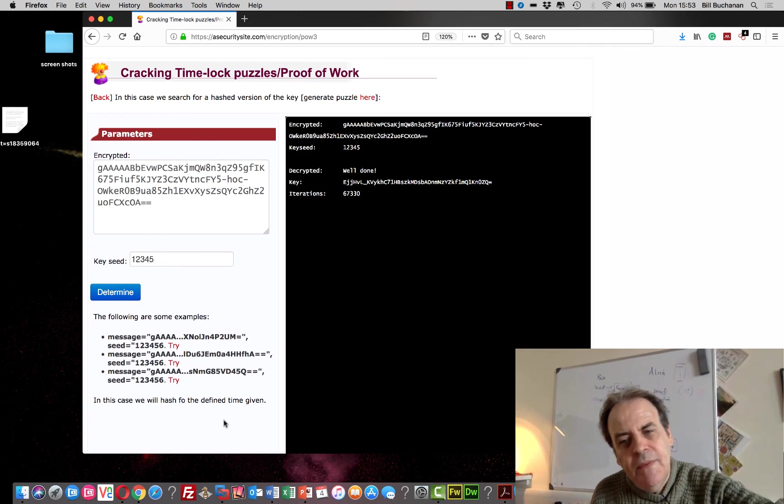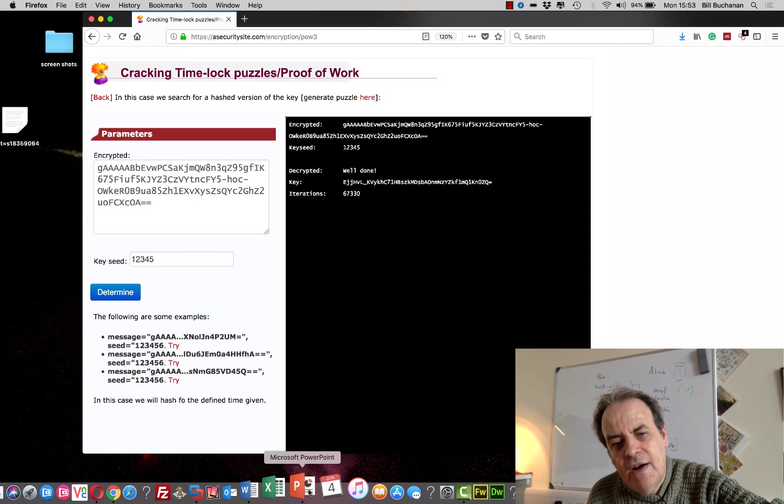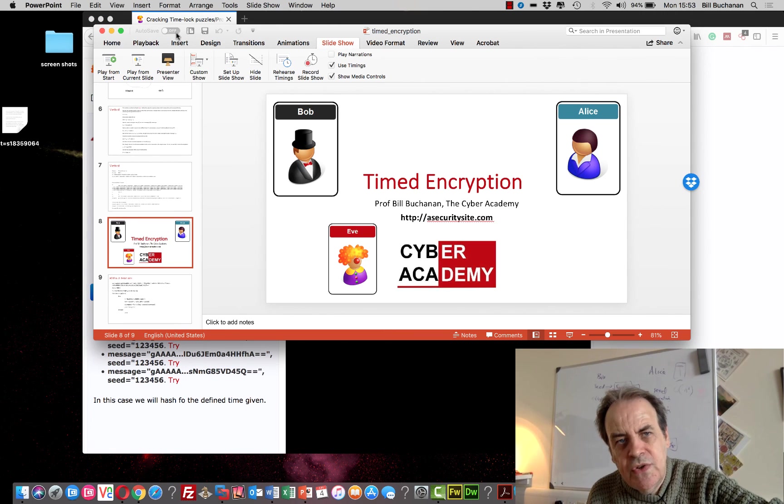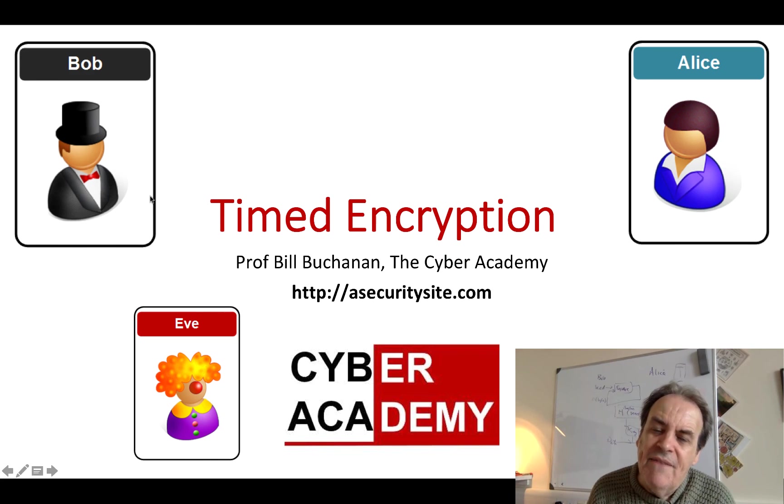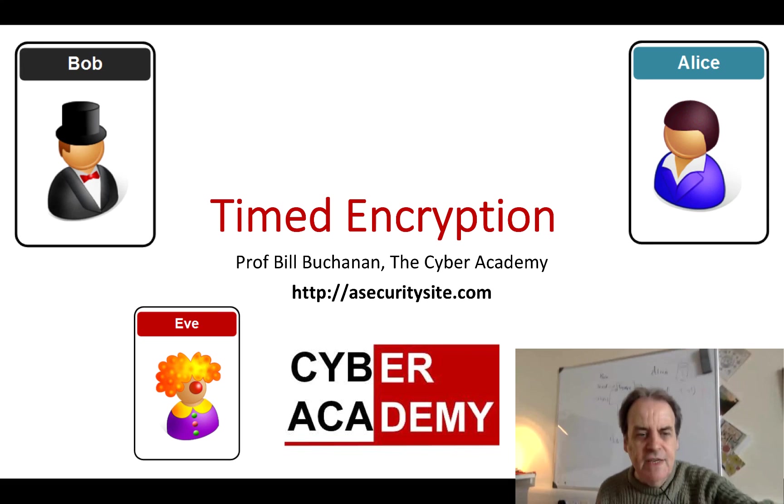In this way we can actually determine an amount of work that Alice will do. The problem that we have of course is that Alice could have a fairly fast processor which could compute the value faster than our estimation, but there's likely to be a cost in there for her. That's an example of timed encryption.